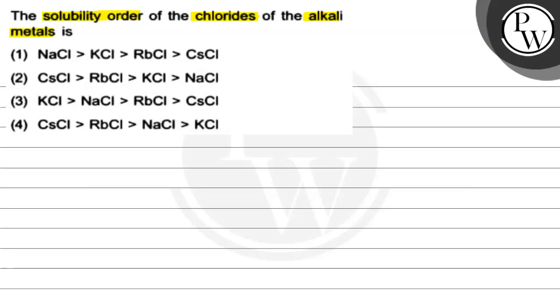First option is NaCl, then KCl, then RbCl, then CsCl. Second is CsCl, then RbCl, then KCl, then NaCl. Third is KCl, NaCl, RbCl, CsCl. Then we have CsCl, RbCl, NaCl and KCl.